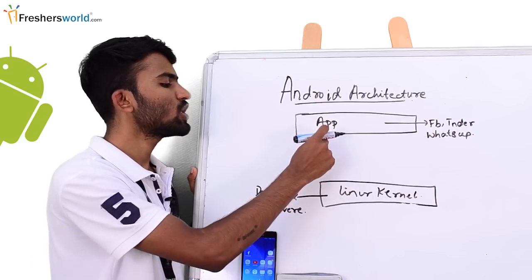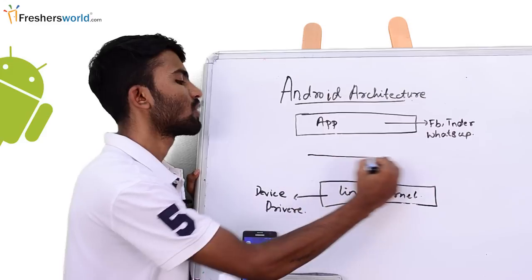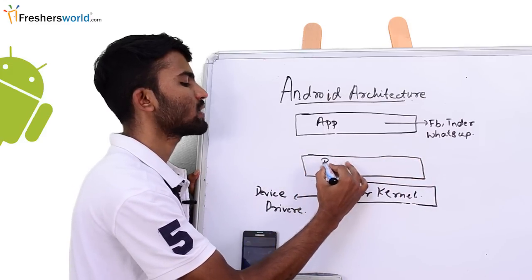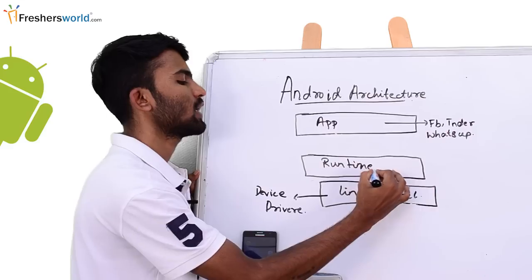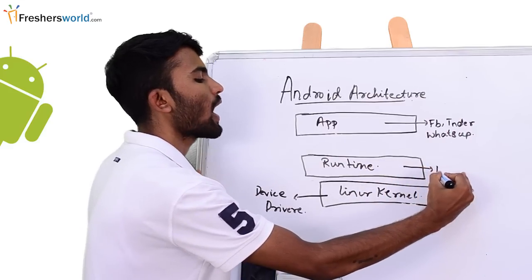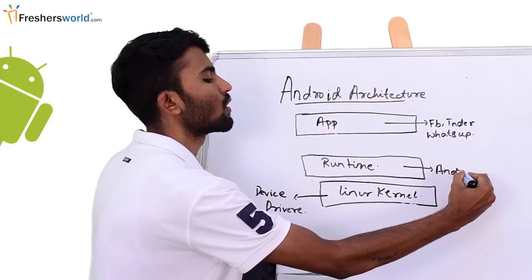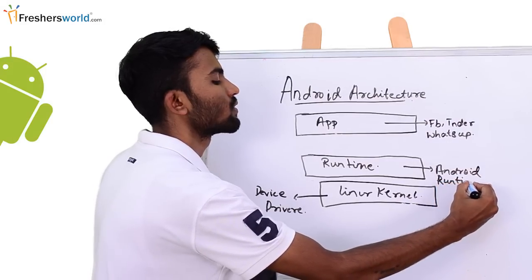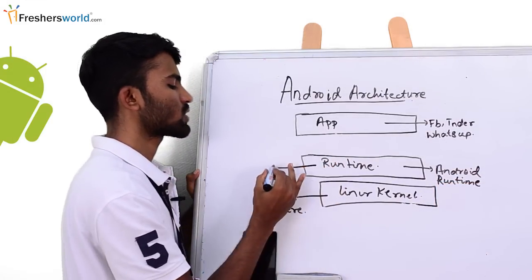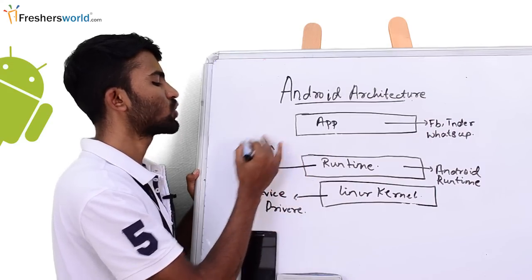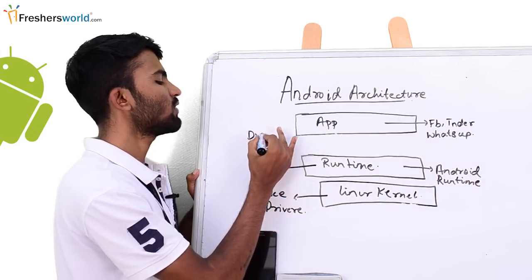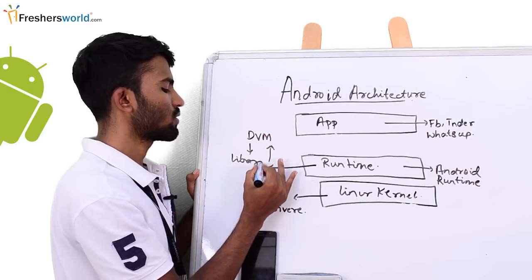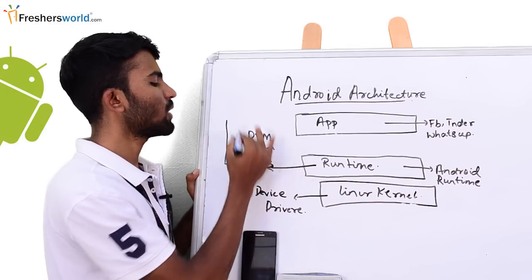The layers in between these two — where are these apps running? On the runtime. In other terms, I will call this the Android runtime. This would be consisting of two components: DVM and libraries. Let's not go deep into this.